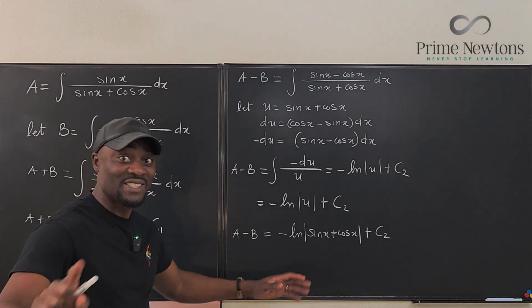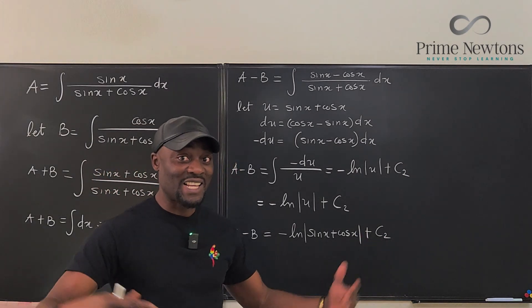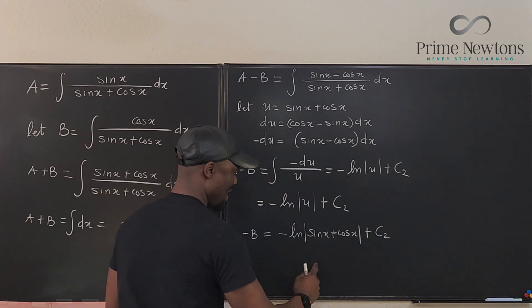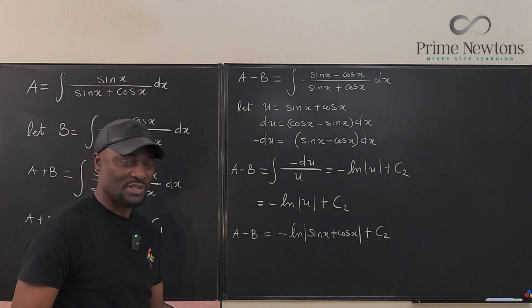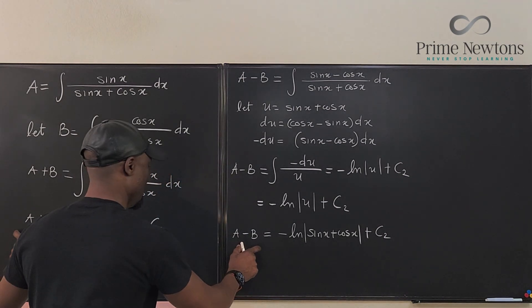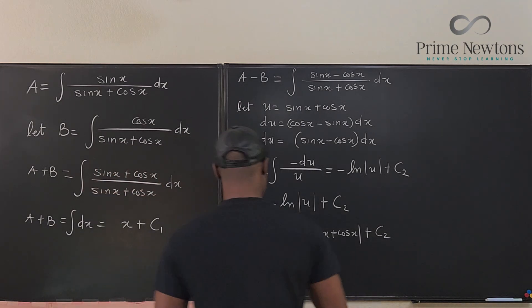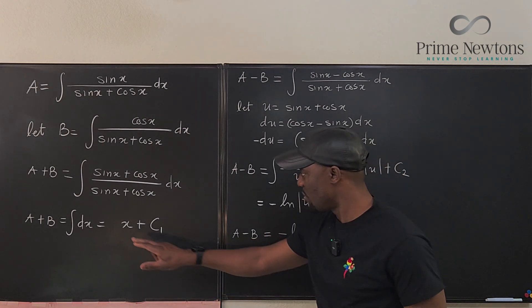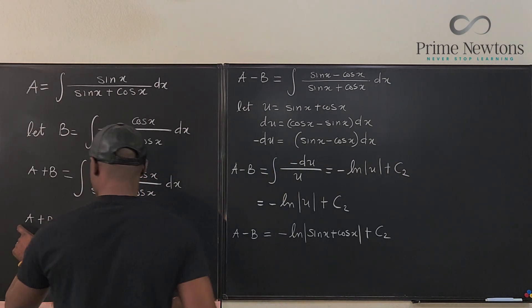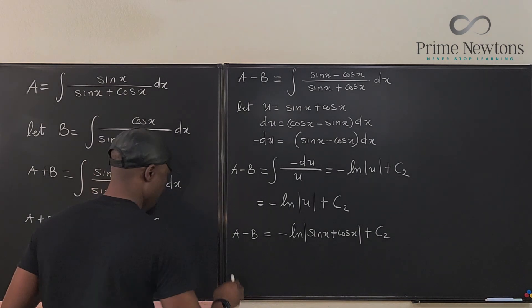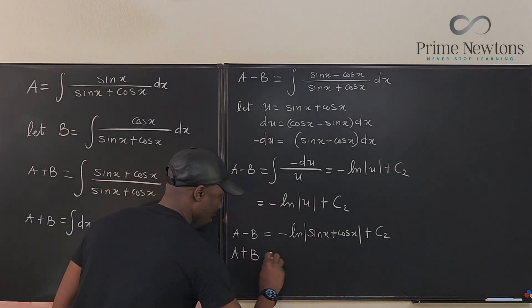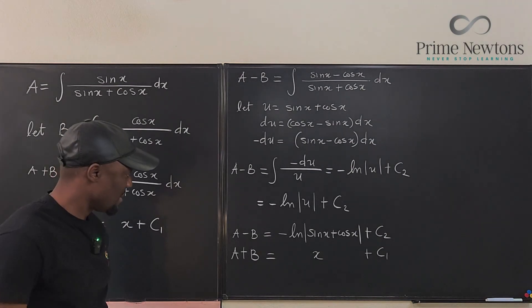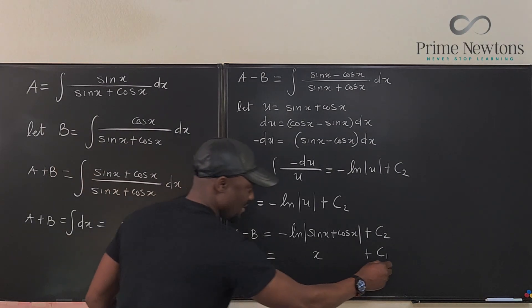We're almost done because now I have generated two equations that can be solved simultaneously. So I got A plus B equals this and I have A minus B equals this. Solving the simultaneous equation, if you add these two equations together, let me write it here. A plus B equals x plus C₁.